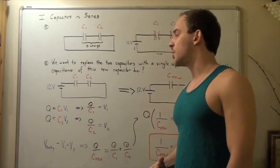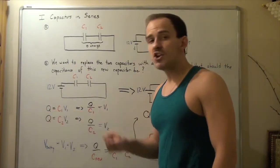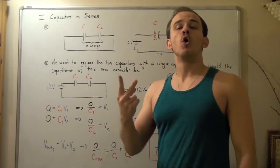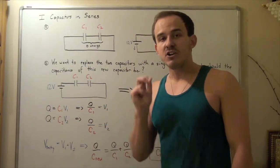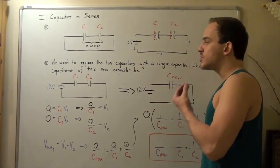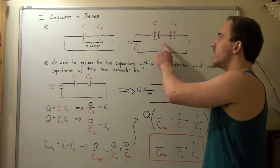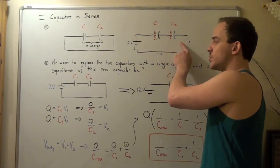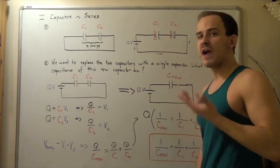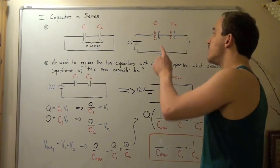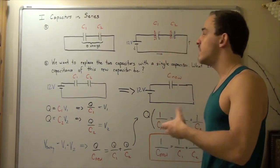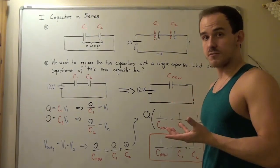Note that whatever the charge is on the equivalent capacitor C_nu, the same charge exists on C1 and C2. So if C1 and C2 are both 2 microfarads, the charge on C_nu, C1, and C2 are all 12 microcoulombs.